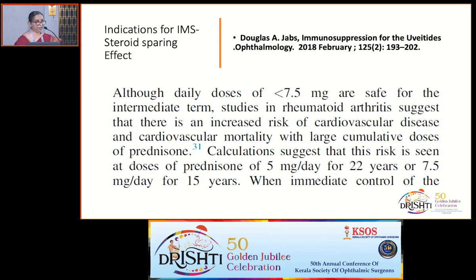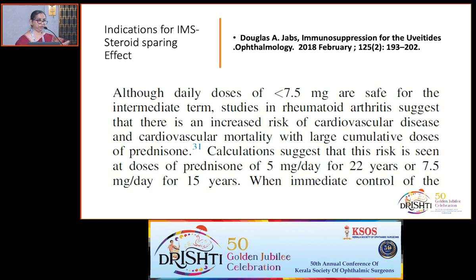The second indication: if you start high-dose steroids at 60 mg, taper to 20, patient reactivates, hike to 40, taper to 15, another reactivation — if you need more than 7.5 mg of steroid to control inflammation for more than three months, you need to add an immunosuppressant. The goal is either to take them off steroids completely or keep it at 7.5 mg or below — the dose considered safe for intermediate use. The cumulative dose of prednisolone also matters. IMS is much better tolerated than high-dose steroids.